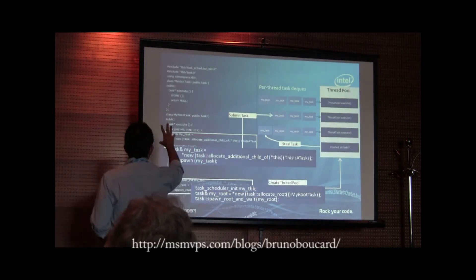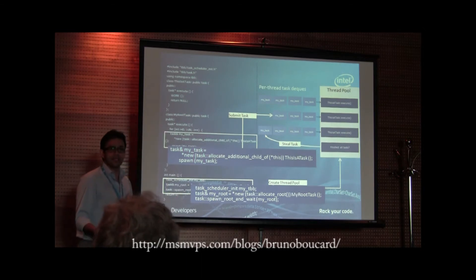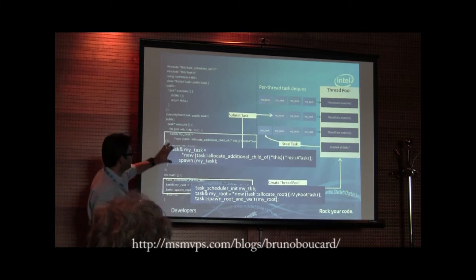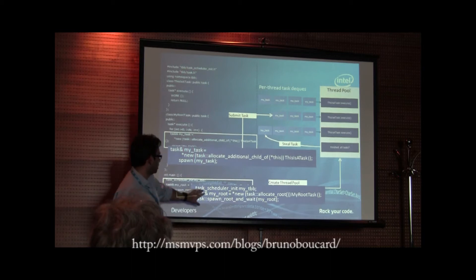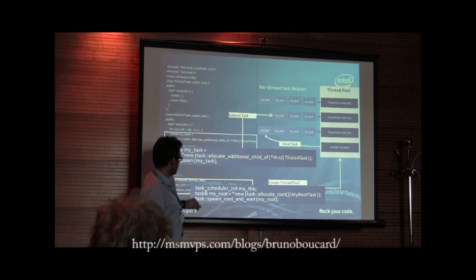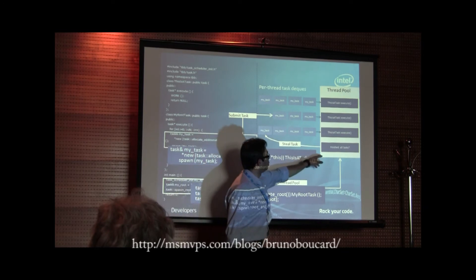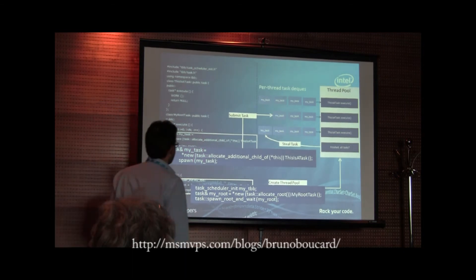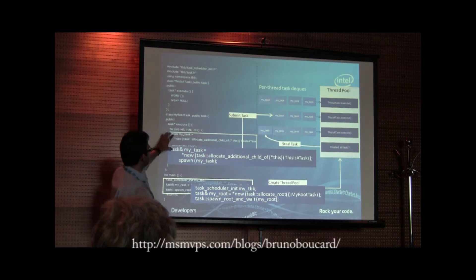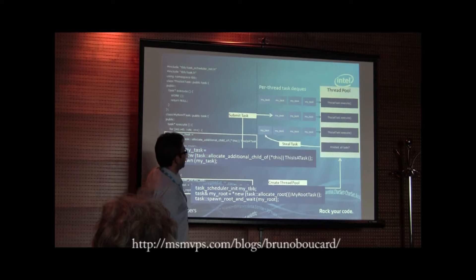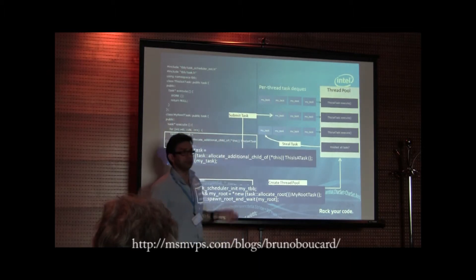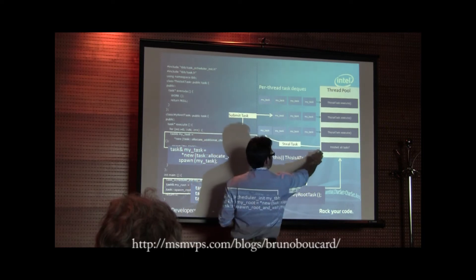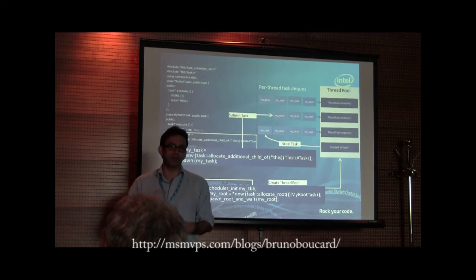Just to give you an idea — it's really hard to read and I don't expect you to read this code. I talked about mini tasks; this is sample code showing you how you initialize the scheduler, create the root task, and then spawn the root task. Once you do that, you have a thread pool that creates a number of threads equal to the number of logical hardware cores. Within your execution you create sub-tasks, spawn them, and these tasks are scheduled into the task queues of each thread. When one thread finishes all its tasks it starts stealing from others, which introduces load balancing.